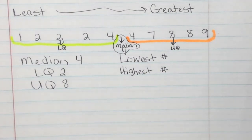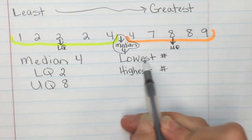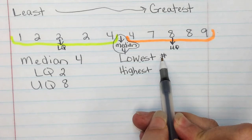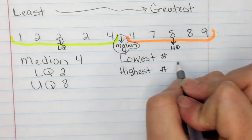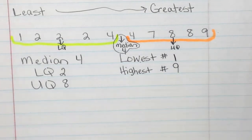Now the two things that we already know: what is the lowest number in our data? One. And what's the highest number? Nine. So from those five things we're now going to create a box and whisker plot.